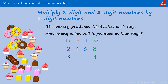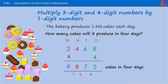4 times 8 is 32 — put the 2 in and carry the 3. 6 times 4 is 24, add the 3 that we carried, that's 27. 4 times 4 is 16, add the 2 we carried, that's 18 — put the 8 in and carry the 1. And 2 times 4 is 8, add the 1 we carried, that's 9. 9,872 cakes would be made in 4 days.